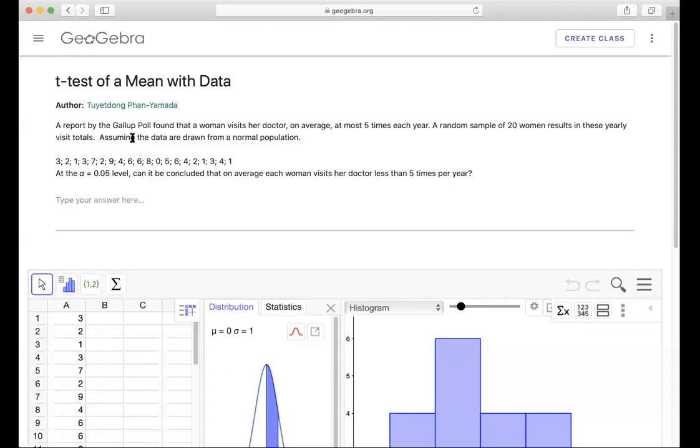A report by the Gallup poll found that a woman visits her doctor on average at most five times each year. A random sample of 20 women results in the yearly total visits. At the alpha equal to 0.05 level, can it be concluded that on average each woman visits her doctor less than five times per year?